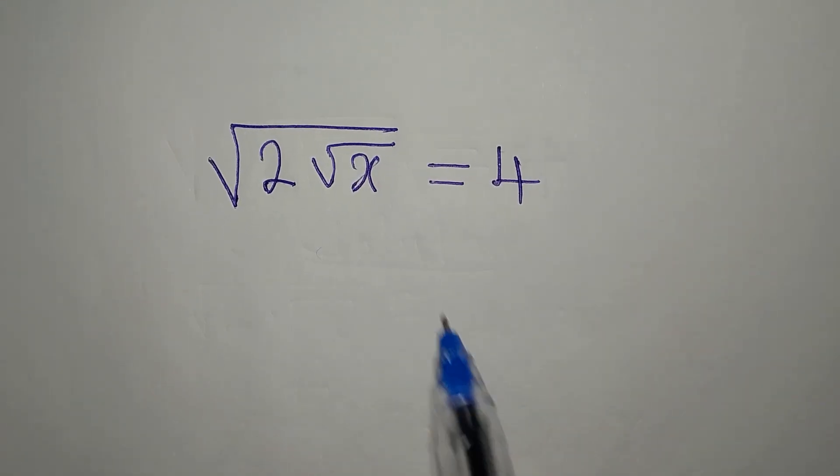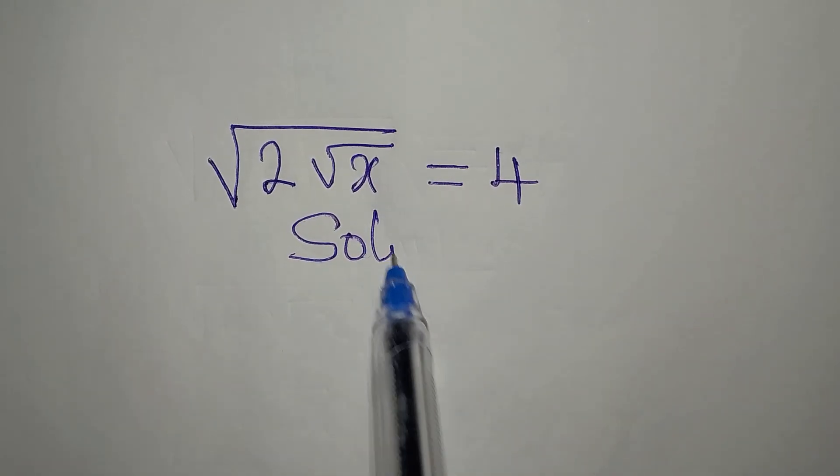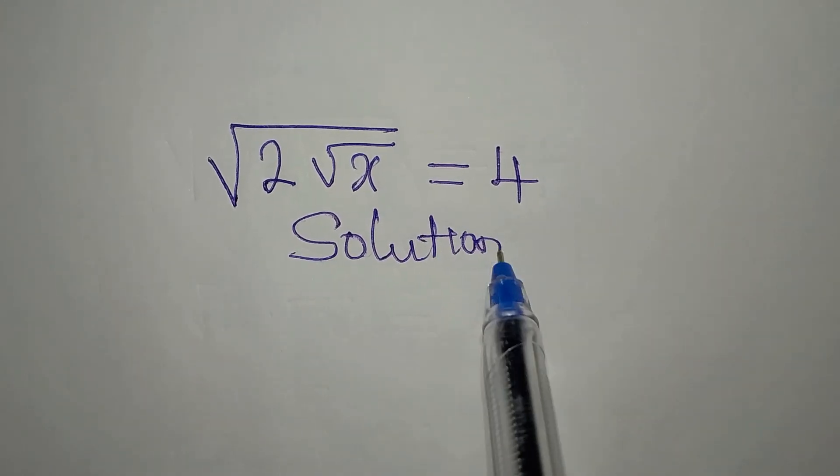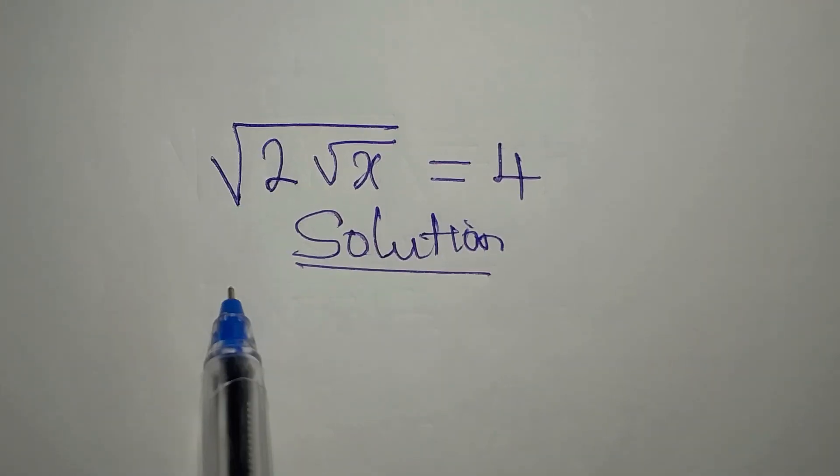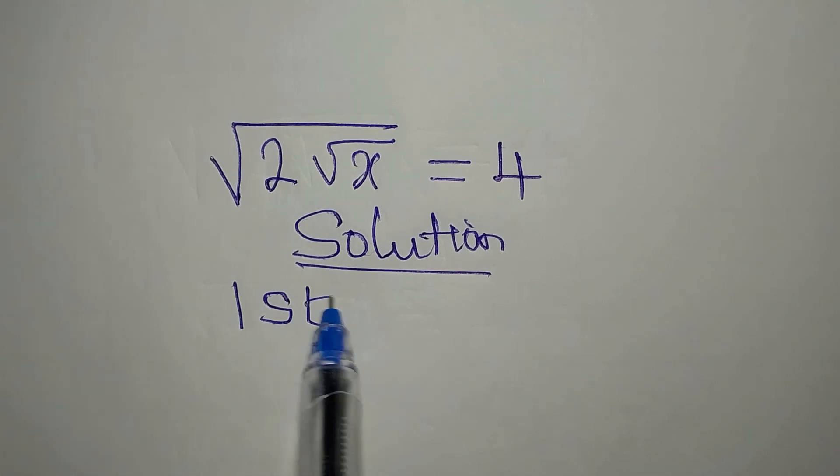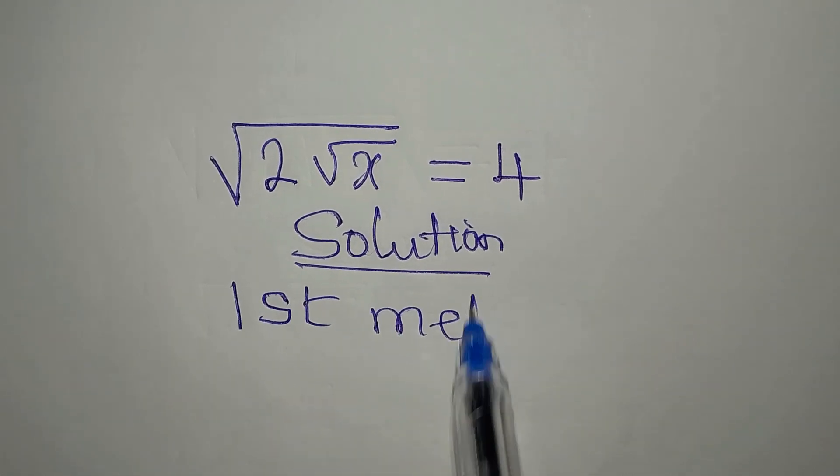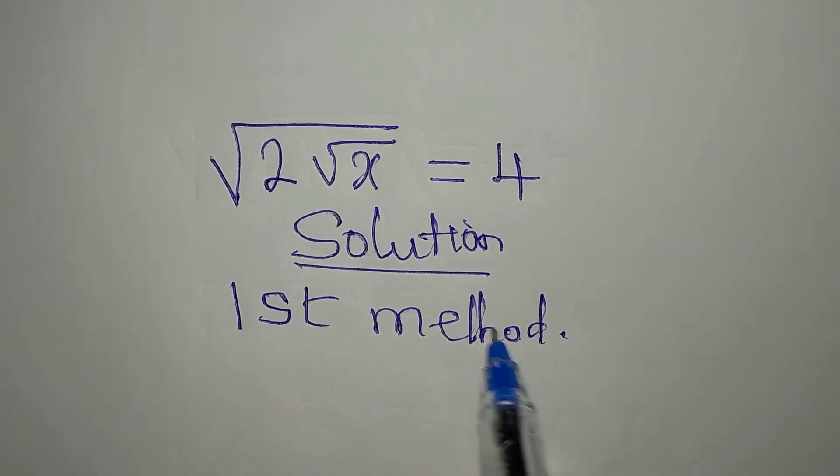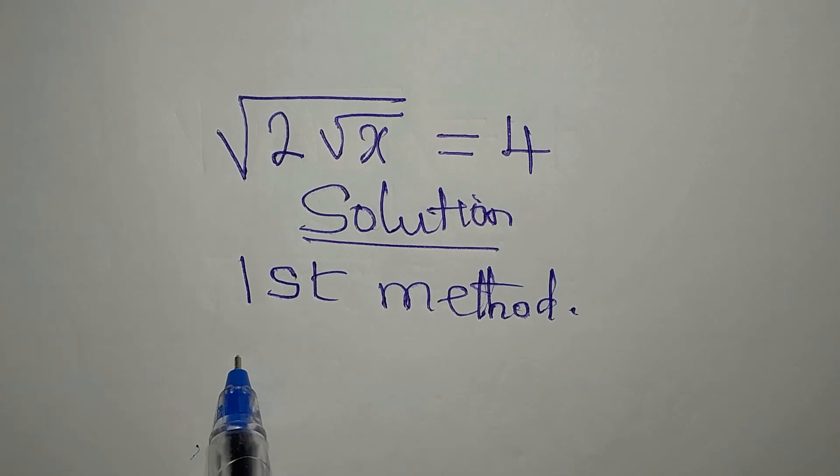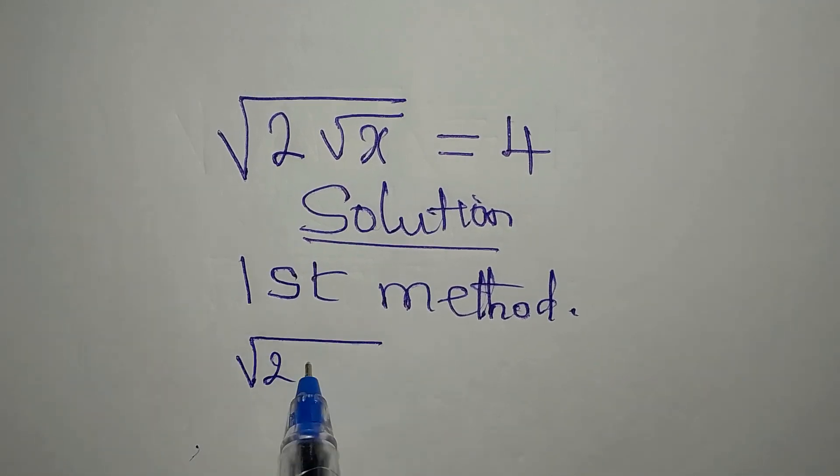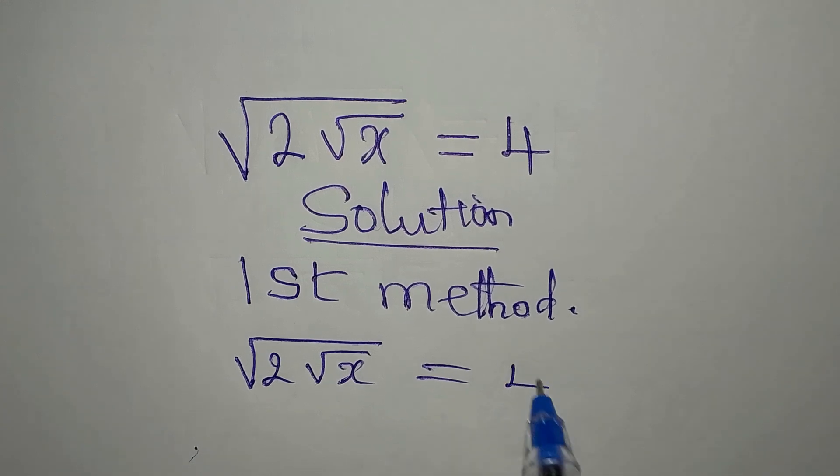Hi, everyone. Let's solve this very quickly. And I'm going to do this in two ways. So let's look at the first method. We have square root of 2 square root of x equals 4.